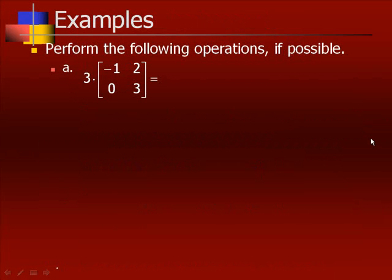Performing the following operations: the first one is multiplication by a scalar, which means we multiply everything in the matrix by 3. So we get negative 3, 6, 0, and 9.